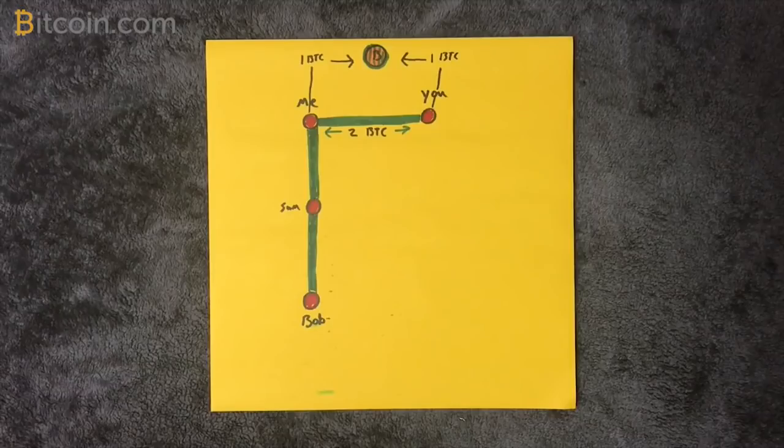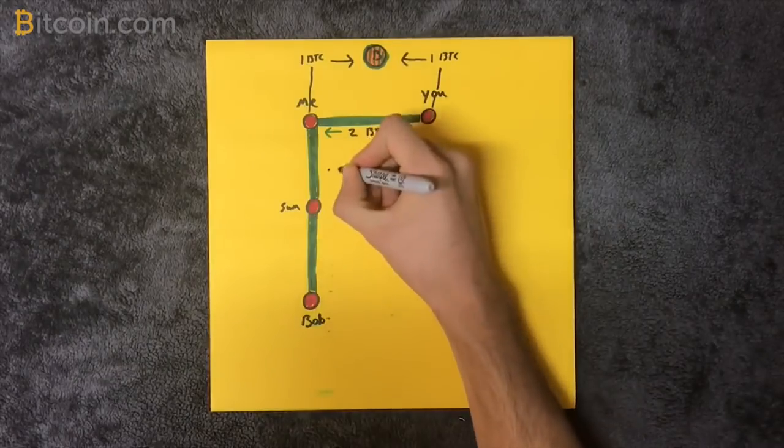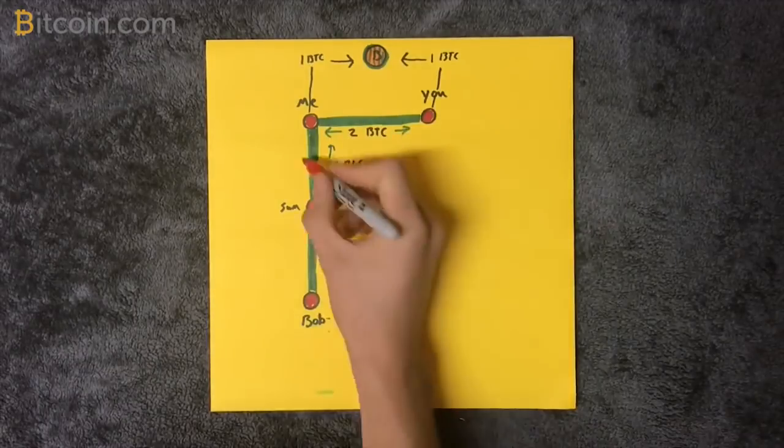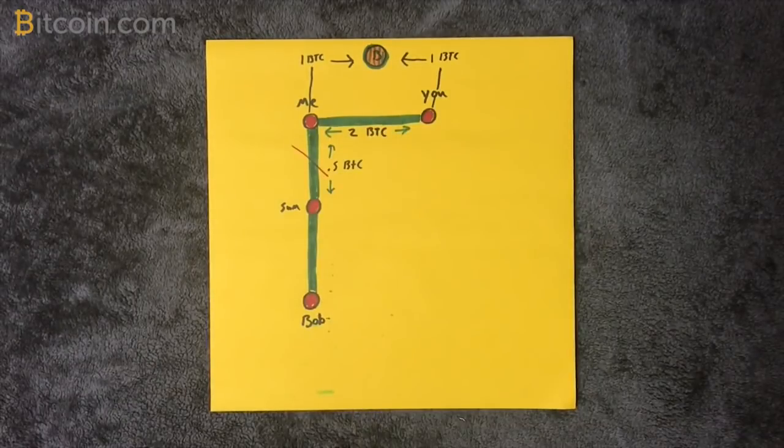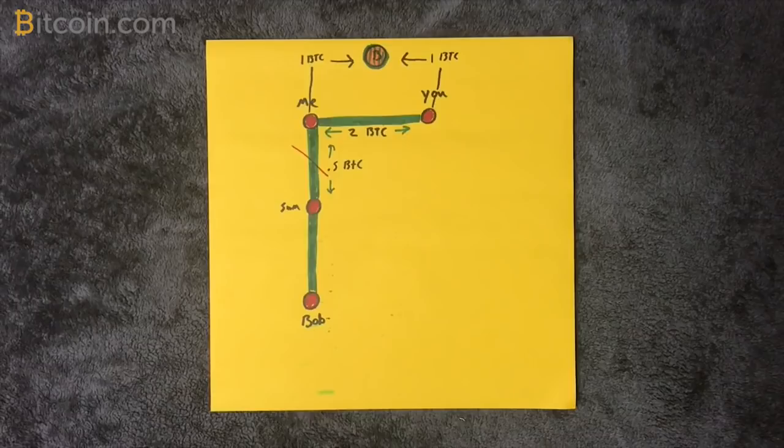But it turns out if Sam isn't as fortunate as us and our channel only has 0.5 bitcoins deposited, this won't work. There has to be enough loaded on each channel along the way for it to be used, and the network must find another route.